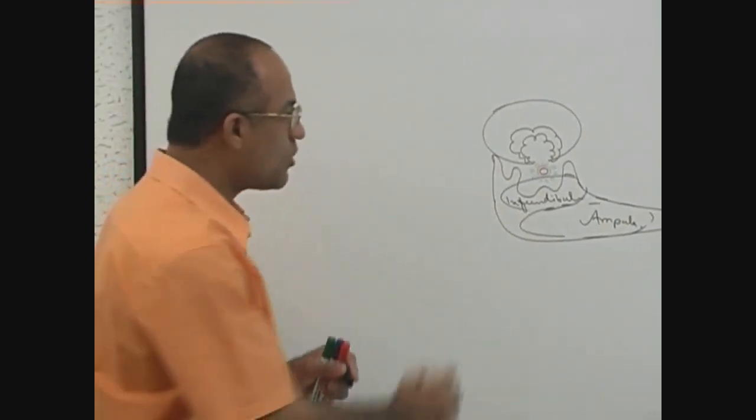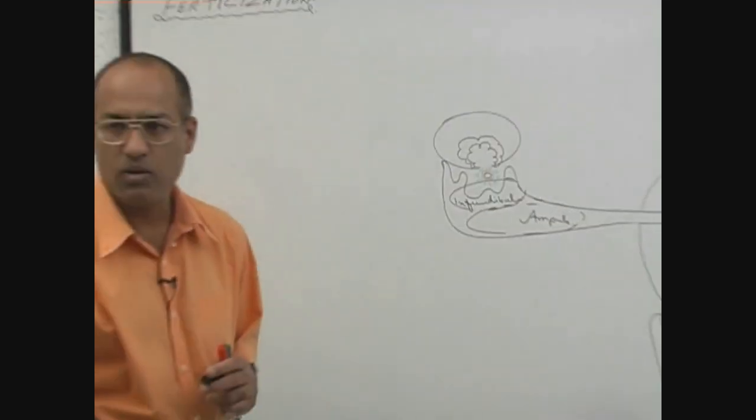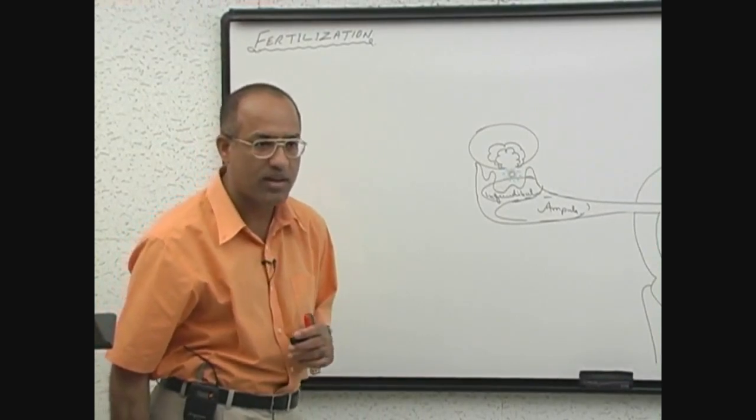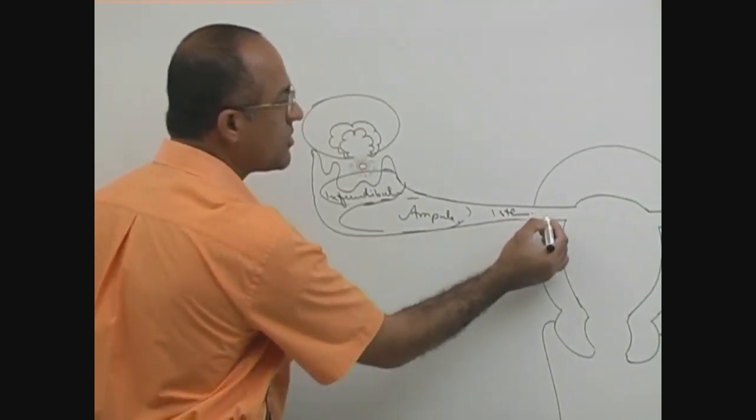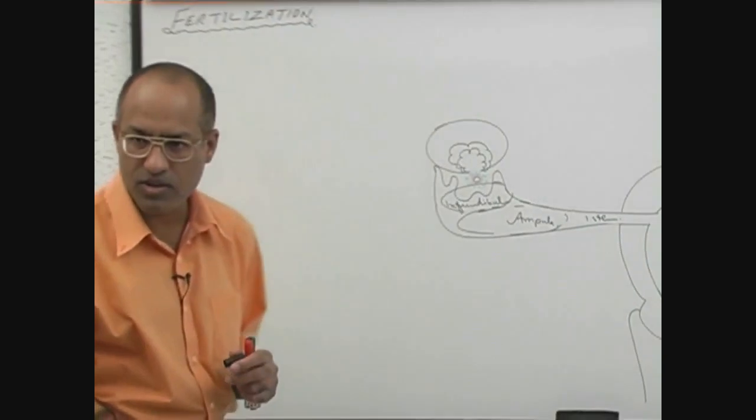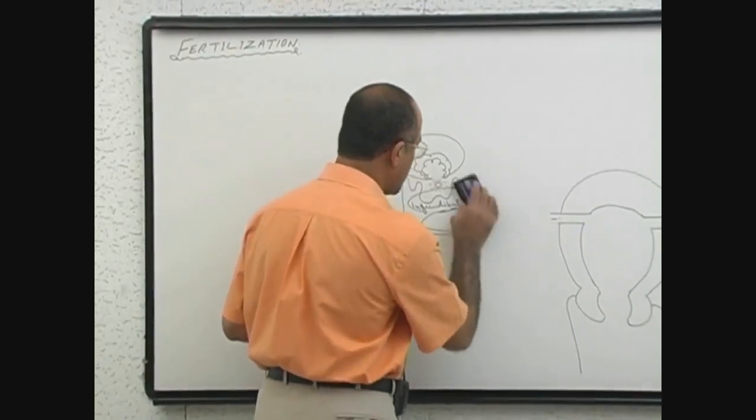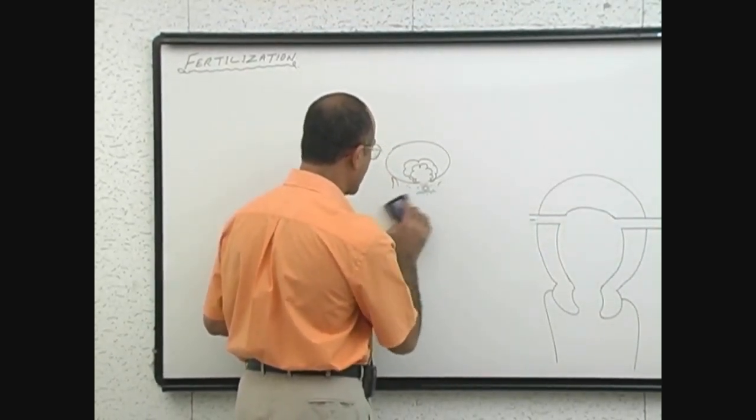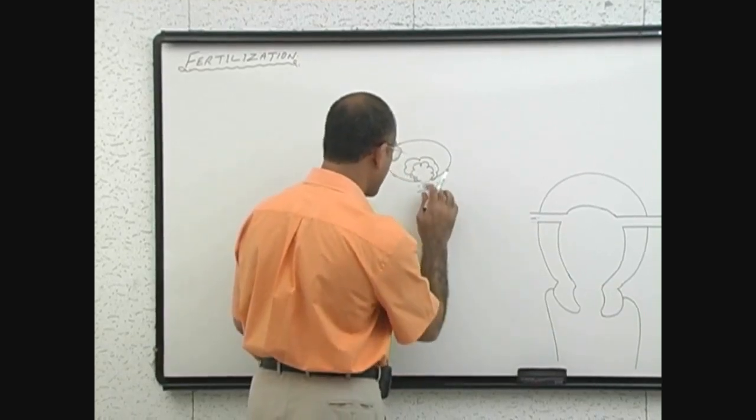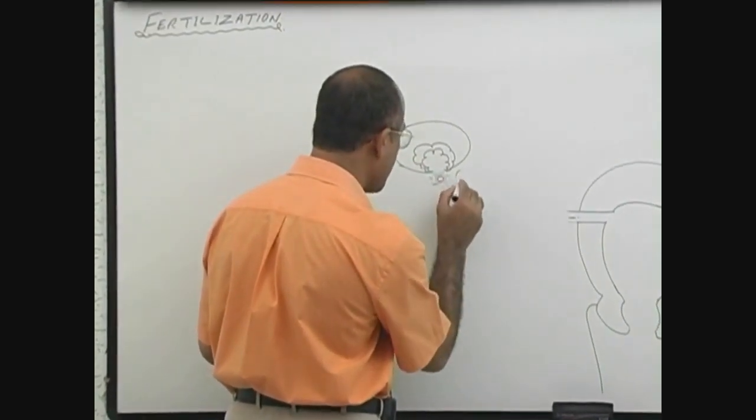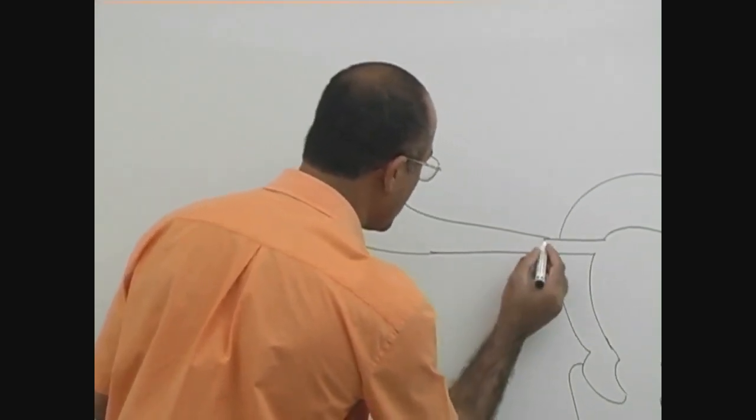And then ovum moves in the ampulla. And ampulla of the uterine tube is the most common site where most commonly you can say fertilization occurs. And then this is ampulla and then this is isthmus and then intrauterine part of the fallopian tube. Now, what we were talking about was that most common site for the fertilization in human beings is ampulla. Ampulla is having these finger-like processes which are called fimbriae.